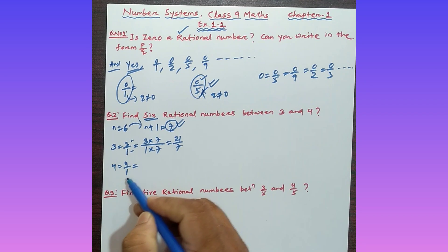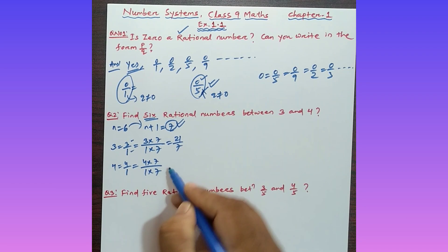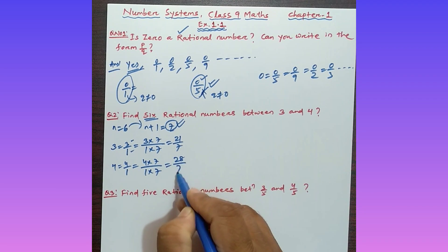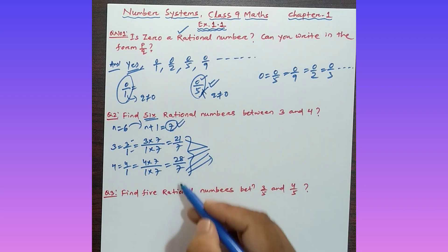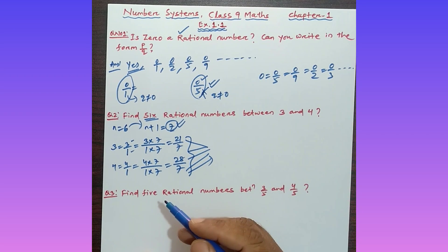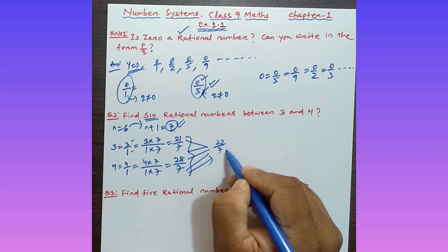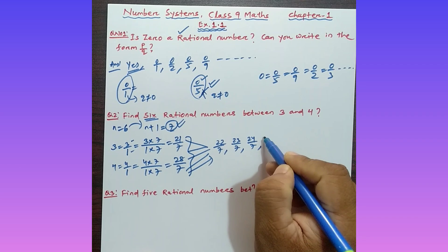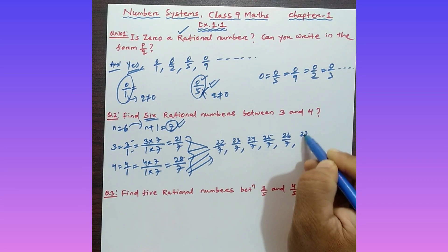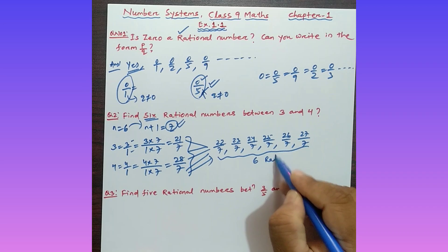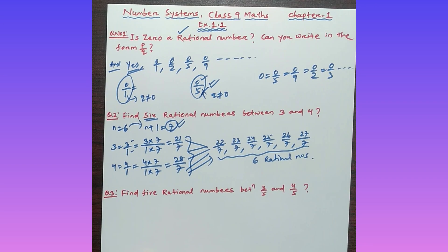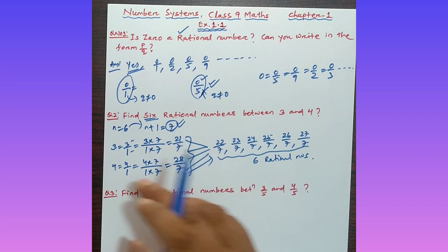Multiply seven both in the numerator and denominator: 3/1 becomes (3×7)/(1×7) = 21/7, and 4/1 becomes (4×7)/(1×7) = 28/7. Between 21/7 and 28/7, we can find six rational numbers: 22/7, 23/7, 24/7, 25/7, 26/7, and 27/7. These are the six rational numbers between 3 and 4.